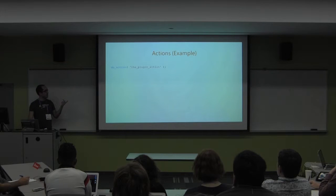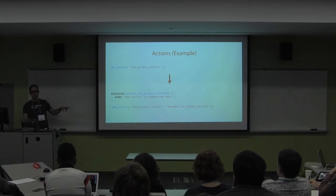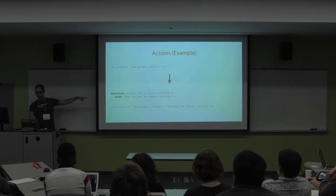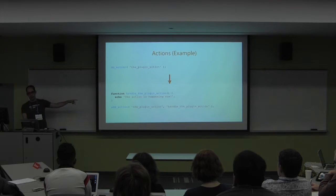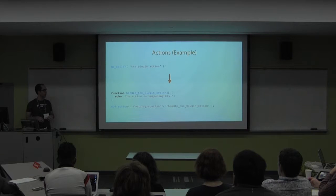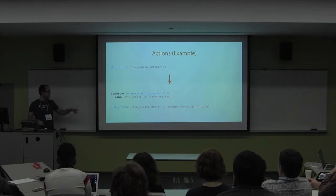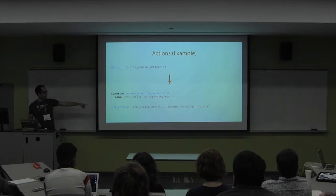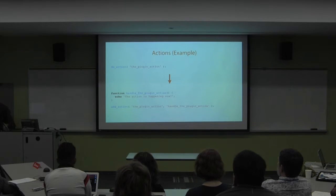Here's an example. If 'plugin_action' is the unique identifier, you create a function called something like 'handle_plugin_action' - it just needs to be unique. In this case, all I'm doing is echoing 'the action's happening now' on screen. You then put the name of that unique identifier in add_action, and the name of your function needs to match.